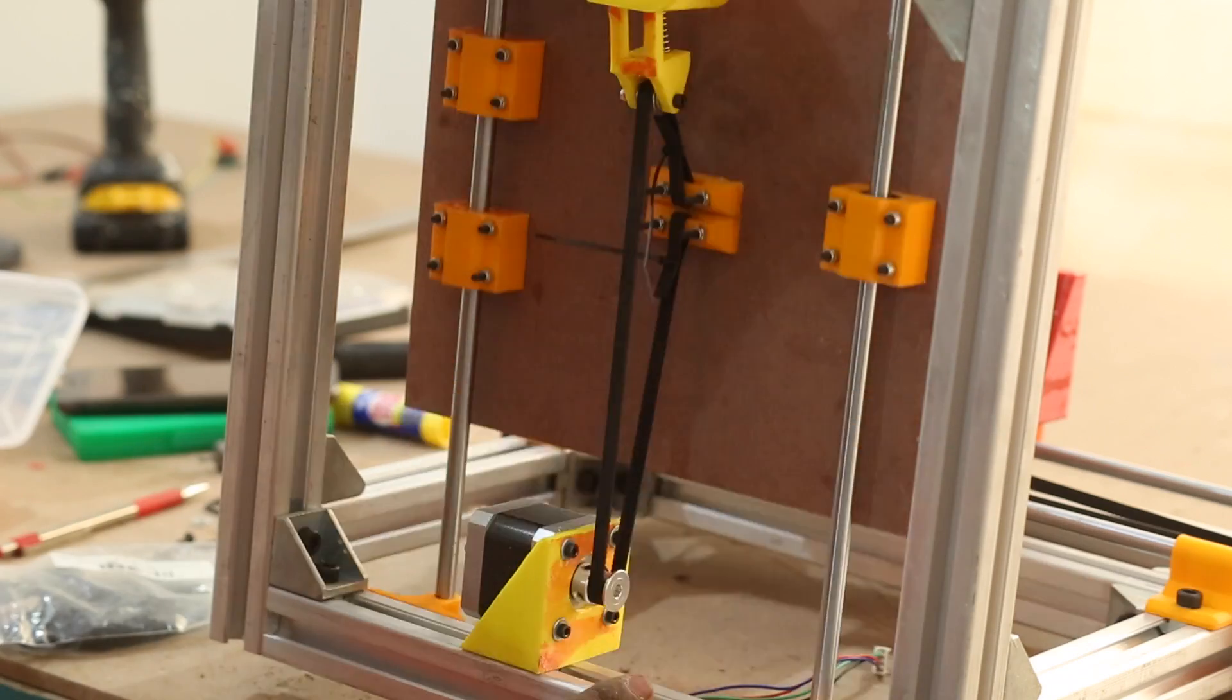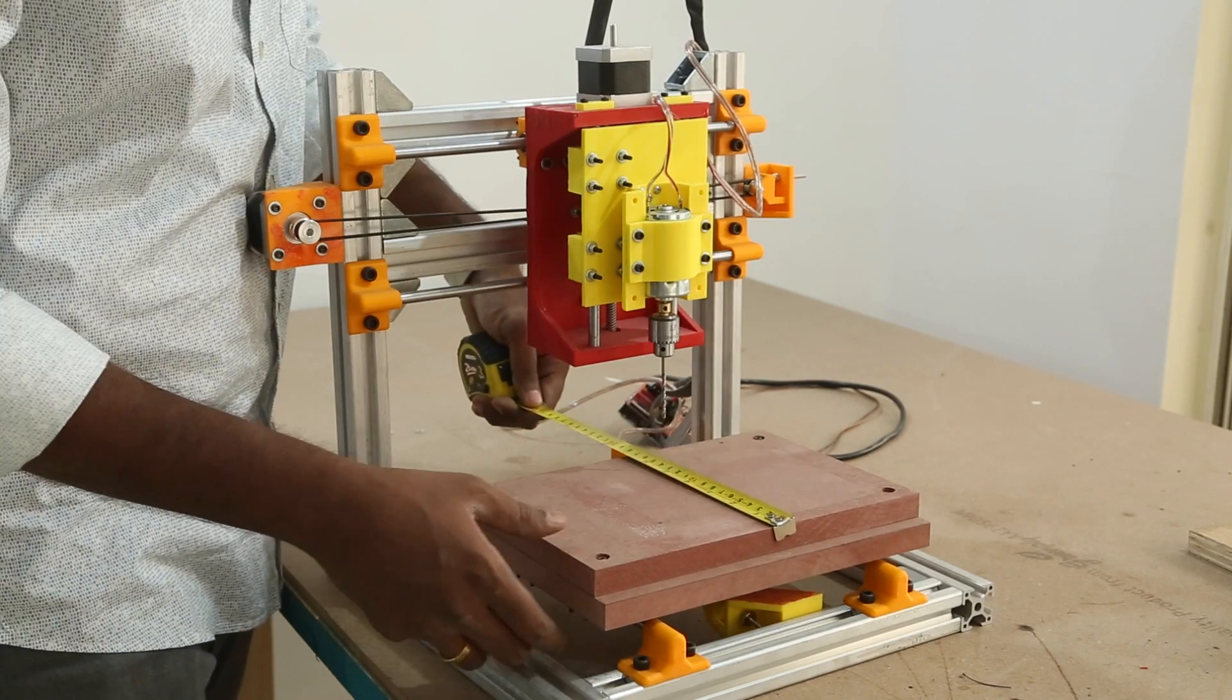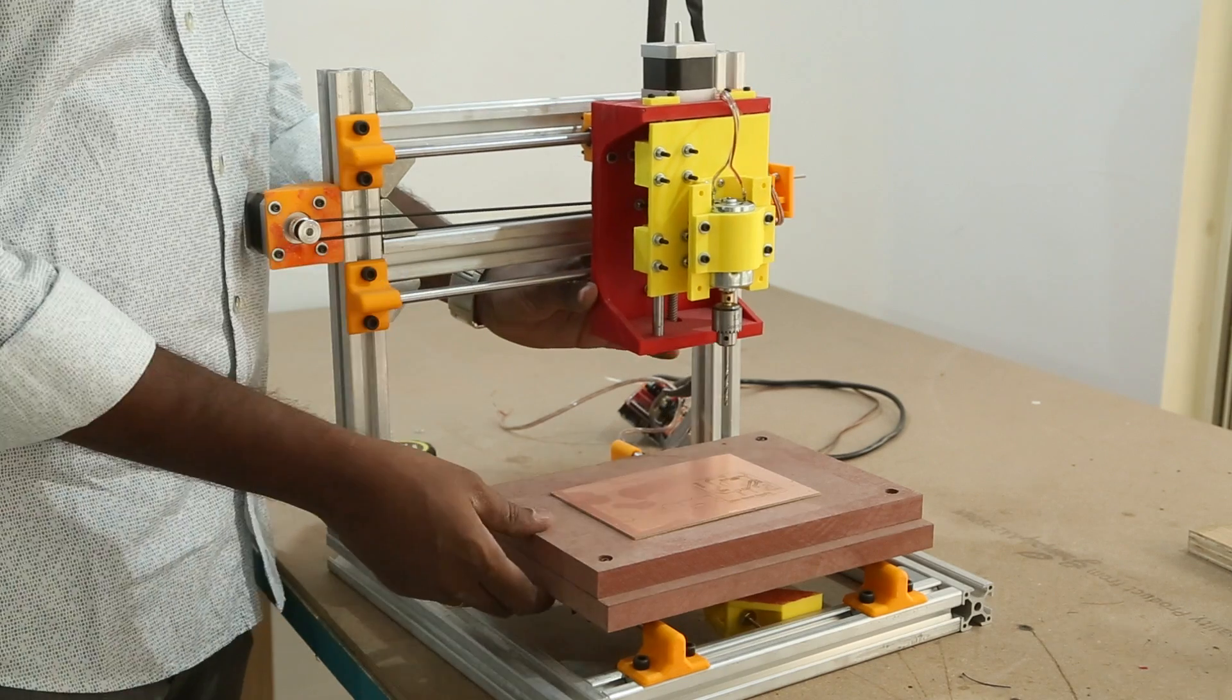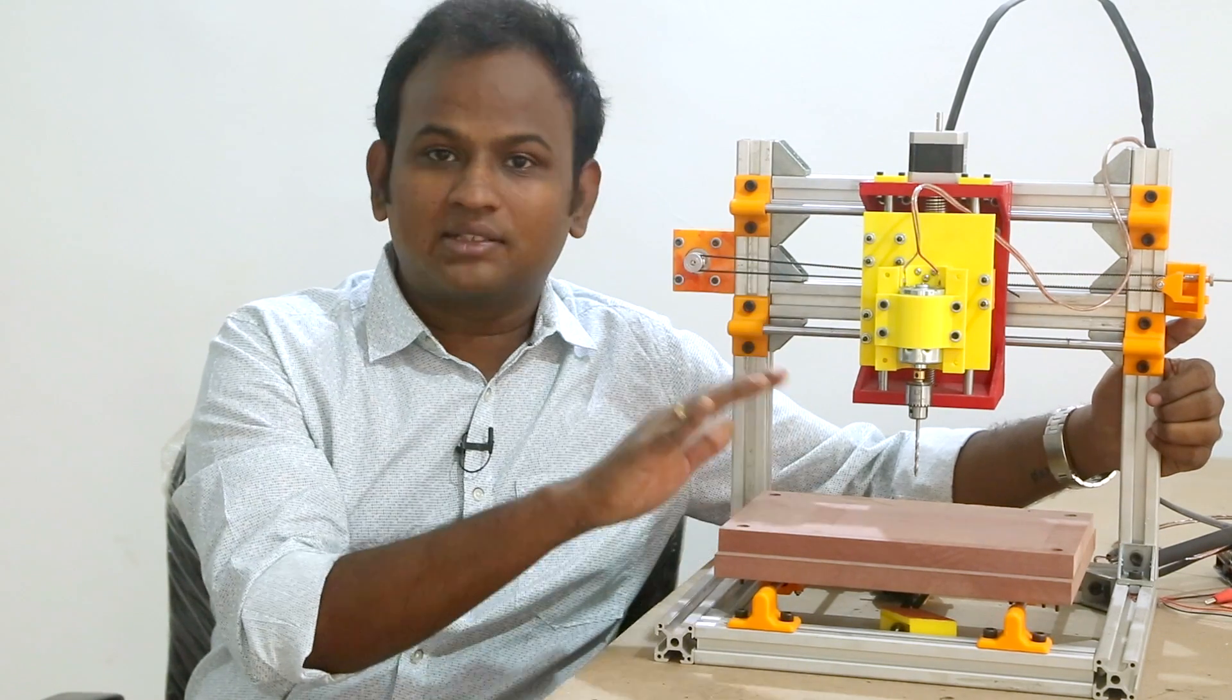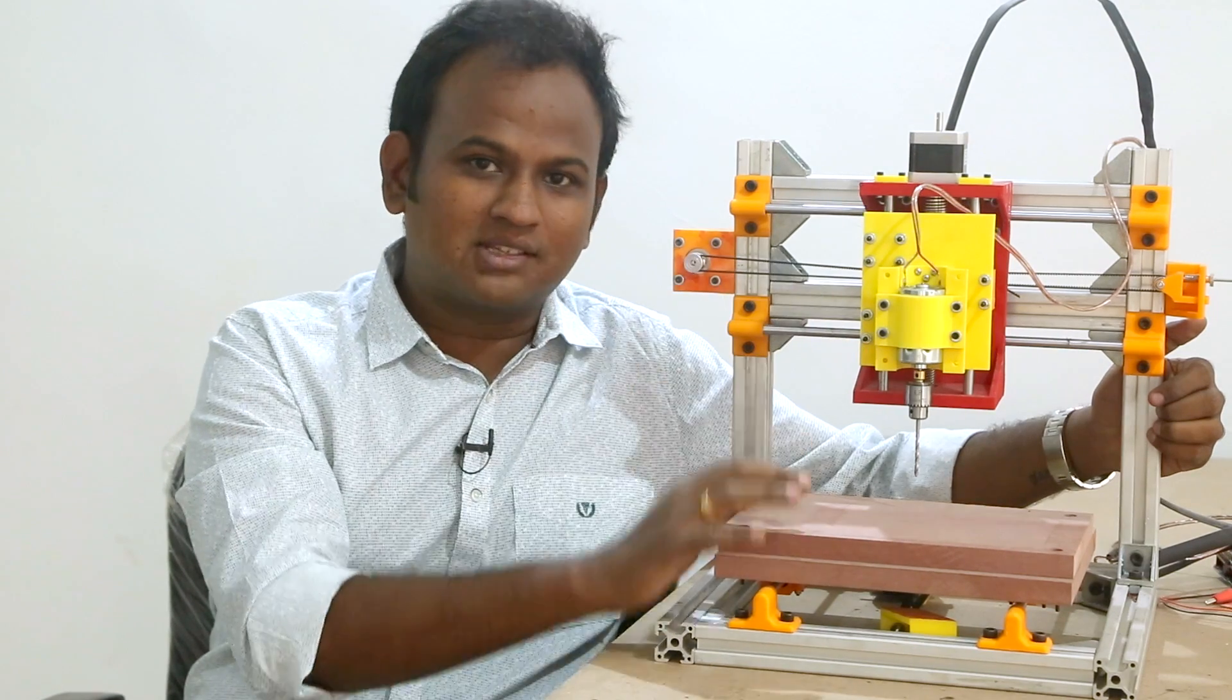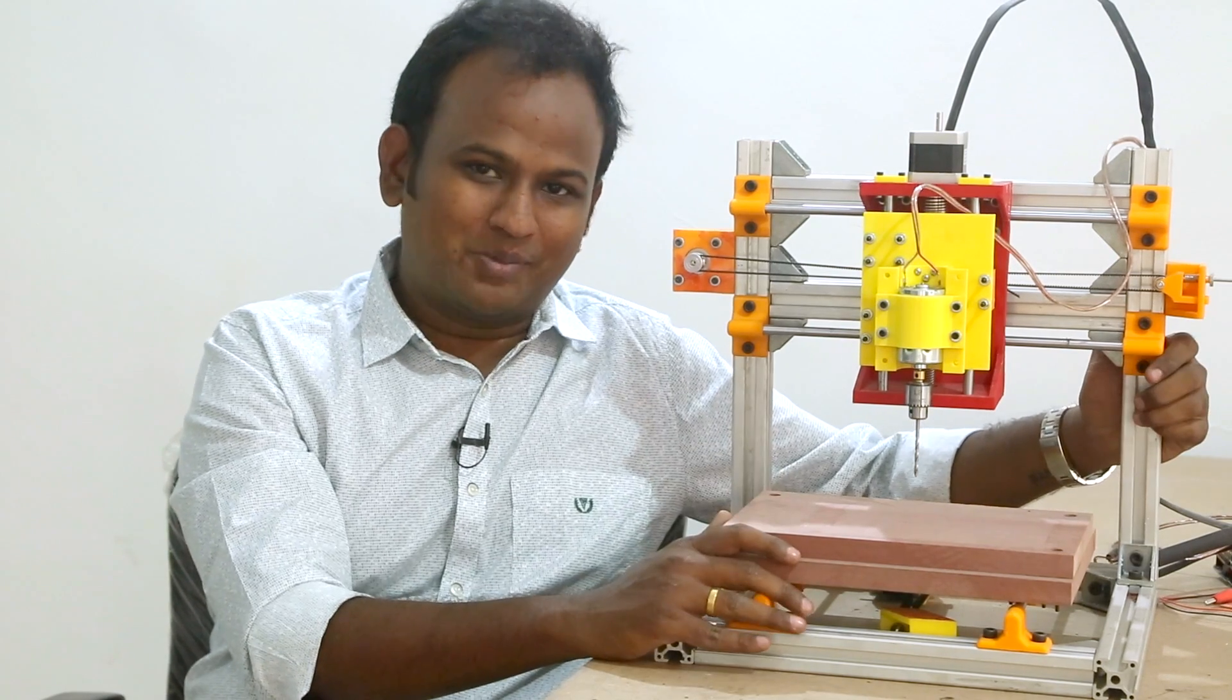With that, the mechanical build is all done. We have the x-axis, the z-axis and the y-axis completed. Usually, a threaded rod is used when it comes to making a CNC to move the axis. But I set myself on a challenge to make the CNC with the GT2 belt, just to see how it works. And I can't be more happier with my decision.